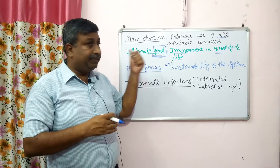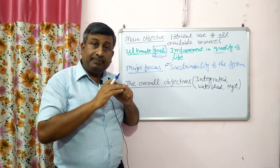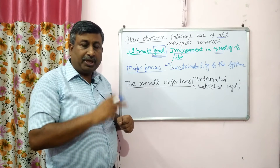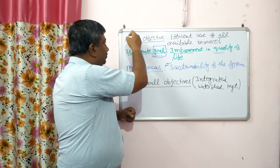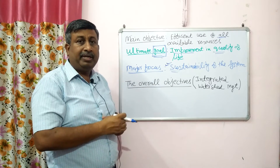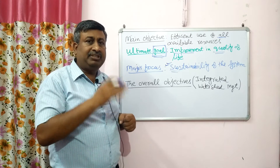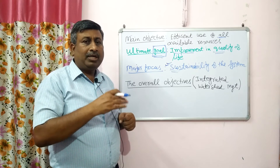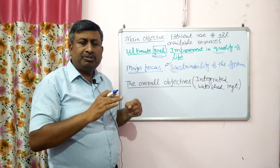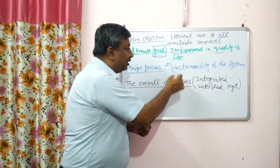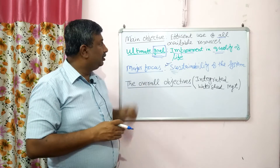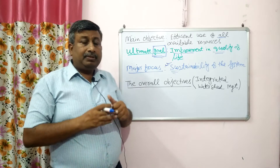In watershed management, not only crops but all living things are considered. The main objective is efficient use of all available resources with optimum production and minimum hazard to environment. The focus is sustainability of the system — if resources are degraded, soil productivity declines, water is depleted, or the climate deteriorates, we cannot sustain. So sustainability is the major focus and the ultimate goal is improvement in quality of life.